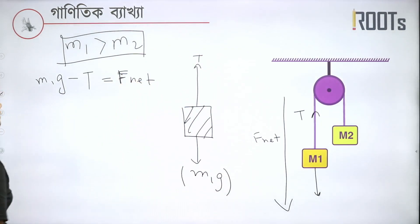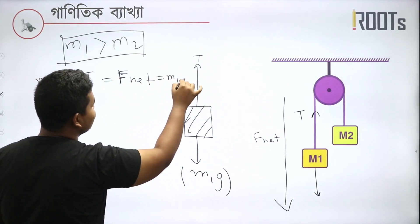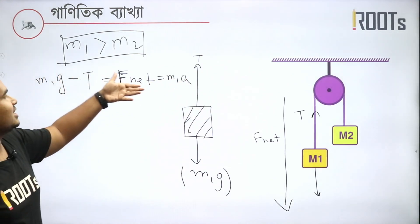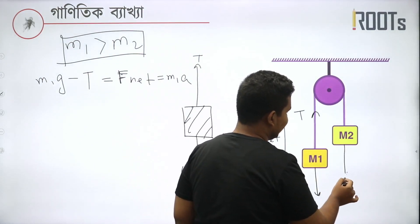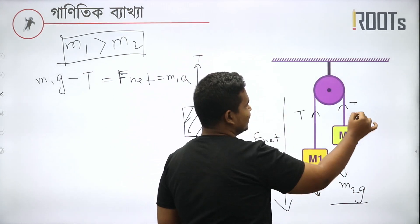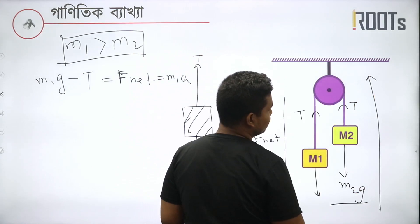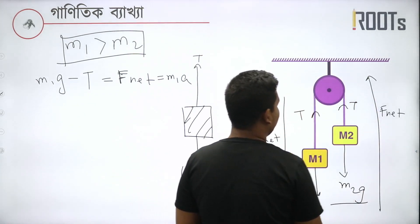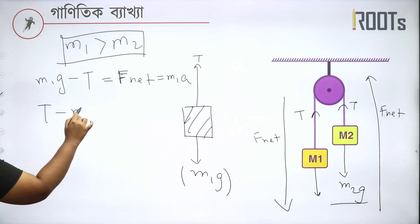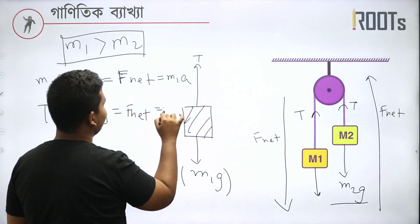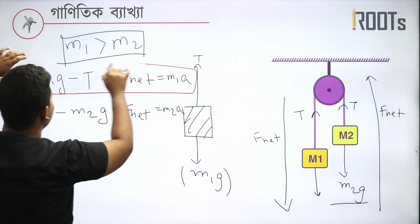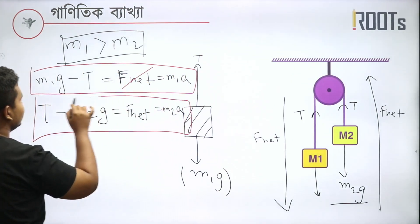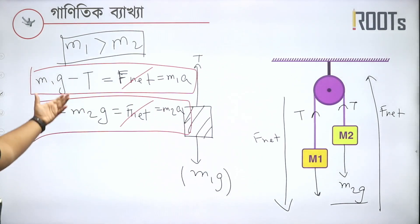M1G minus T is equal to F_net, and F_net equals M1A. Now for the second body: weight is M2G, tension is T, and the resultant net force — F_net equals M2A. So T minus M2G equals F_net, which is M2A.